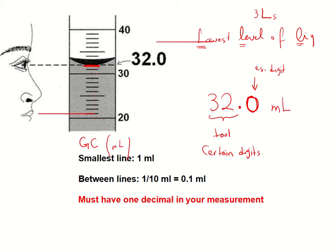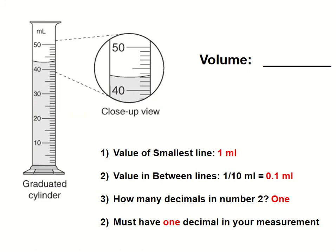Now I have to add the estimated digit manually. Since the meniscus is exactly touching the line at 32, I may say 32.0 — reporting in mL. Please understand: if you report just 32 mL, it implies the 2 is your estimation. But here I could measure exactly 32, and since the meniscus is touching the line exactly, the zero is my estimation digit. So 32.0 mL is the correct answer for that example.